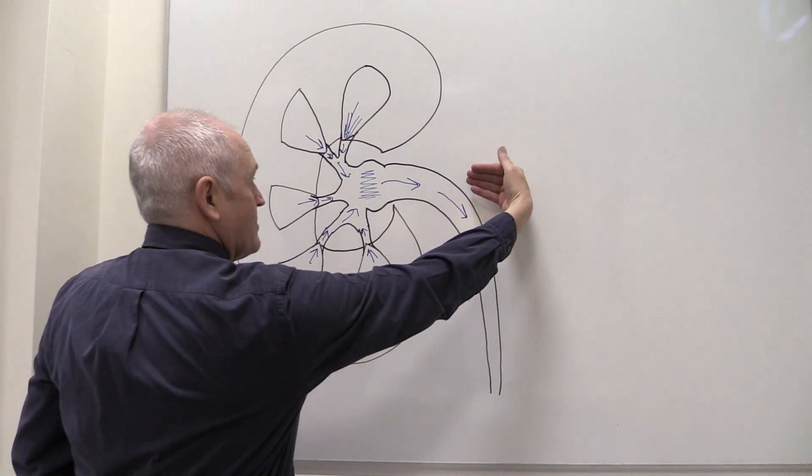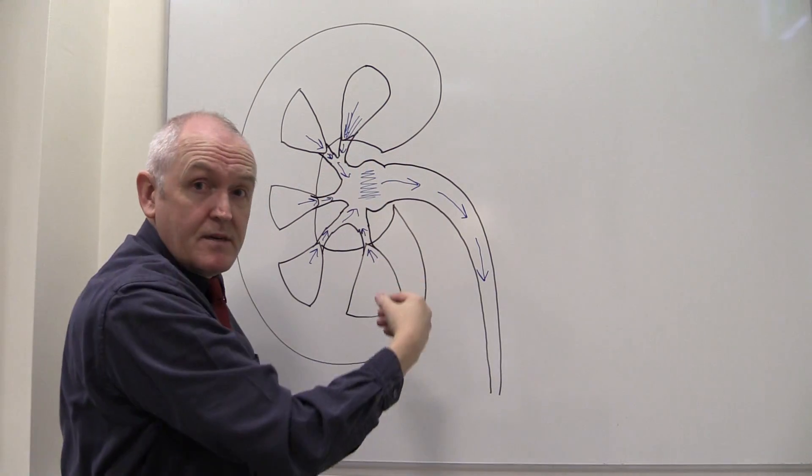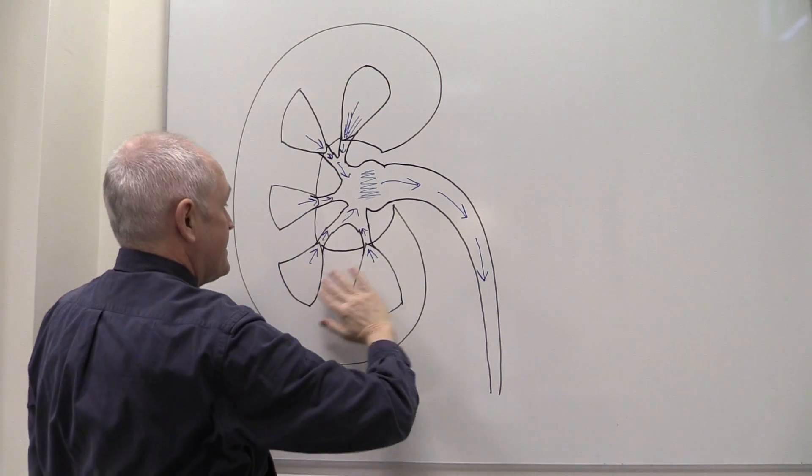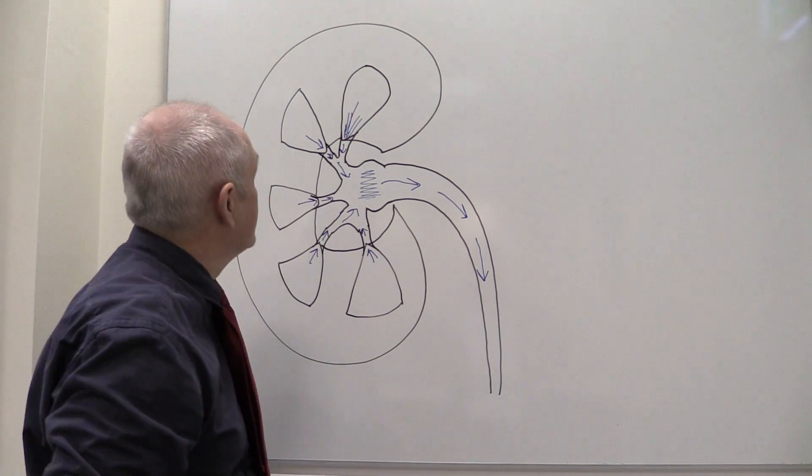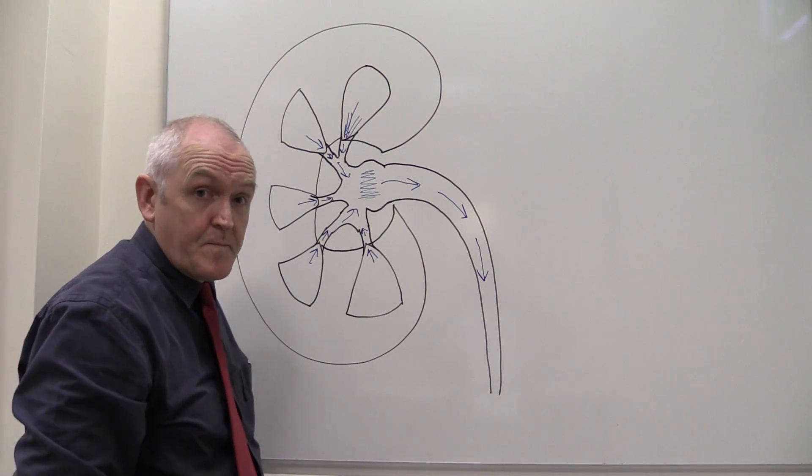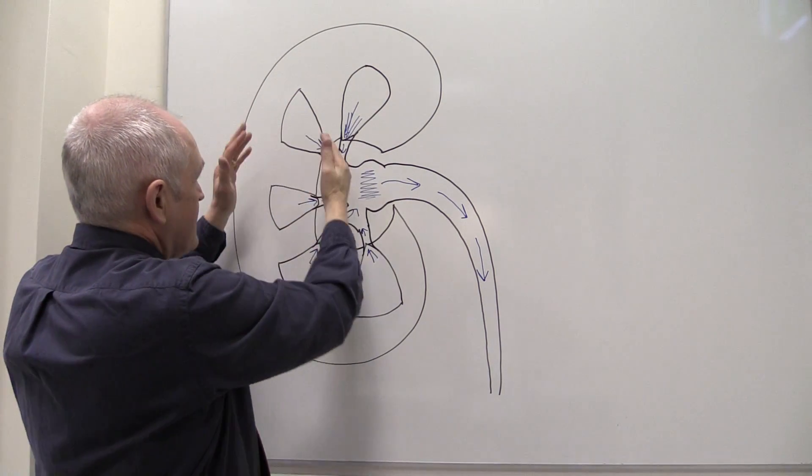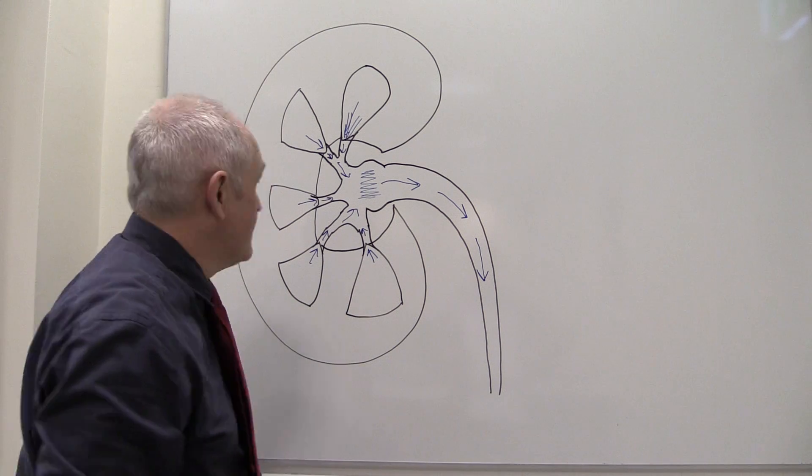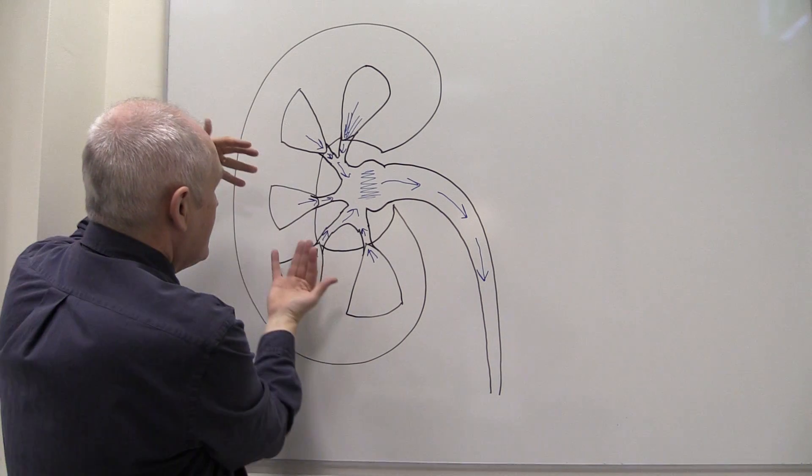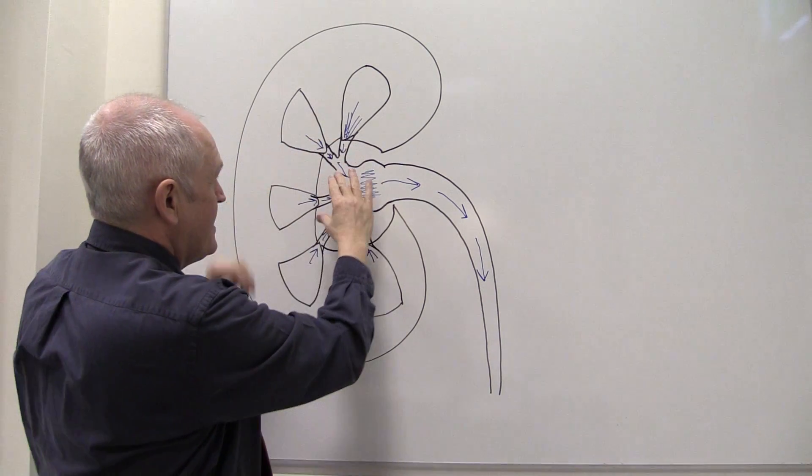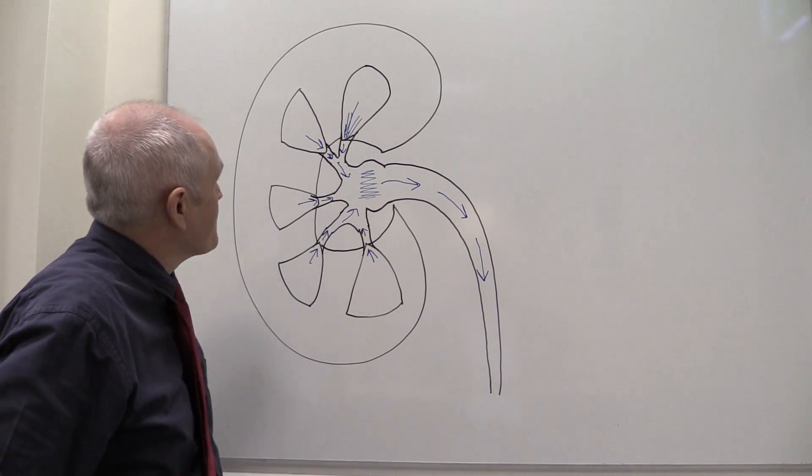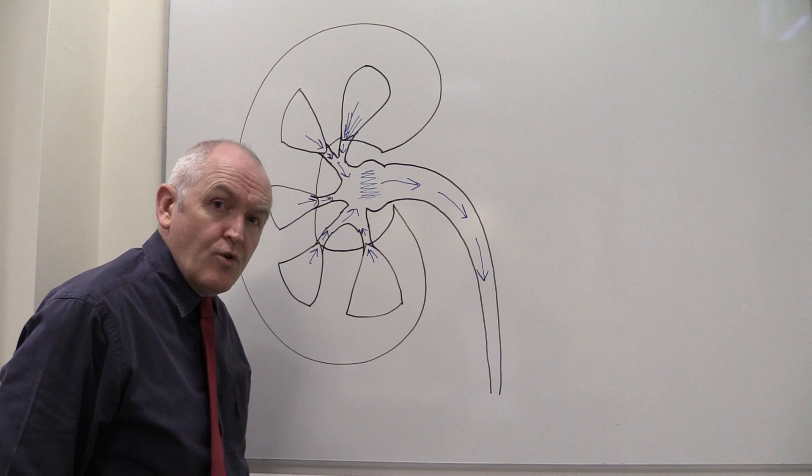And of course the renal artery is going to take blood through the hilum, through the renal sinus, into the tissue of the kidney, which is the parenchyma of the kidney. So the parenchyma is the medulla and the cortex together. The blood is going to be filtered, urine is going to be formed, and then blood is going to drain from the parenchyma of the kidney back into venous vessels in the sinus, eventually draining into the renal vein. So that's sort of the overall structure of the kidney.